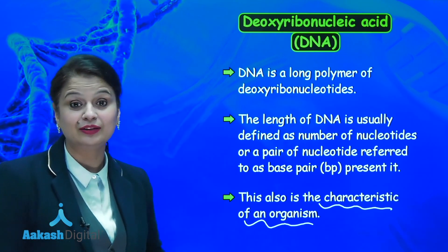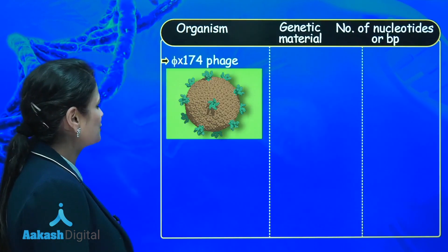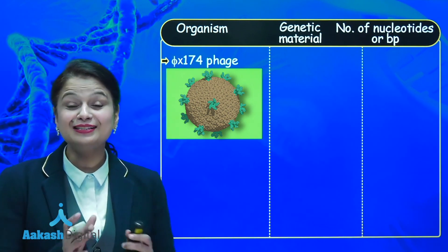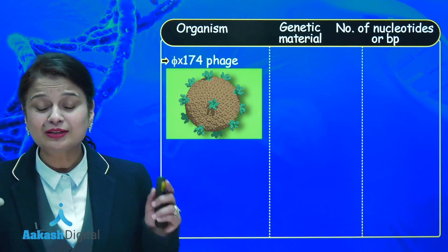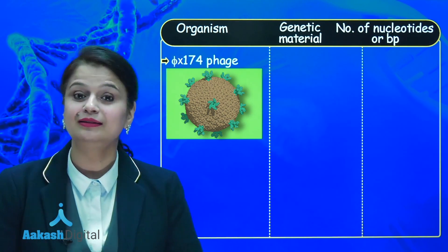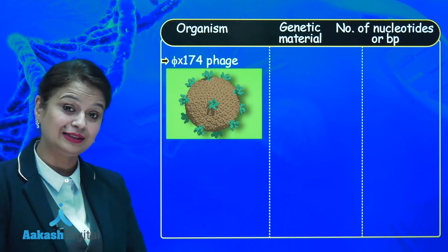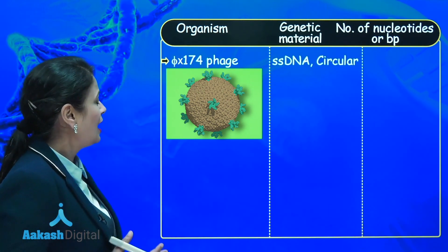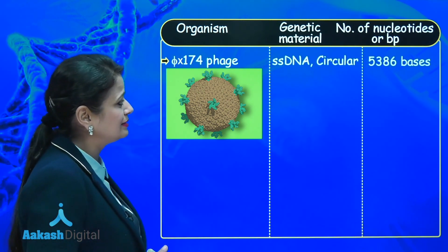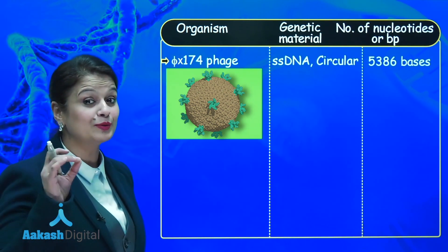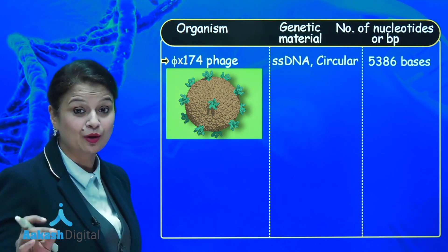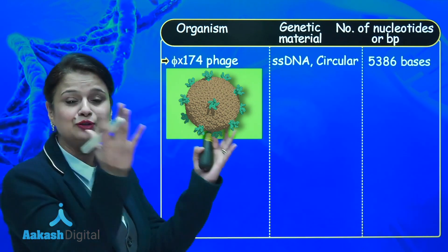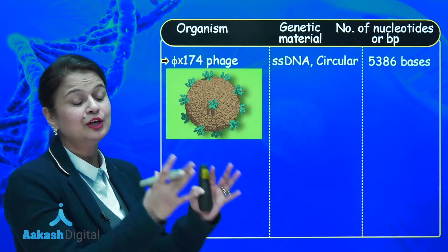The first example is the φX174 virus. This virus is peculiar because it contains single-stranded DNA rather than double-stranded DNA, and that DNA is not linear — it is circular. The number of bases present is 5,386. I am writing 'bases' here, not 'base pairs', because single-stranded condition is present and there is no pairing partner.